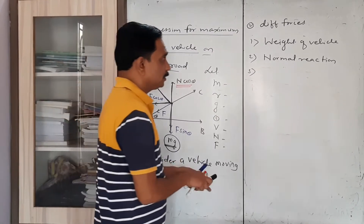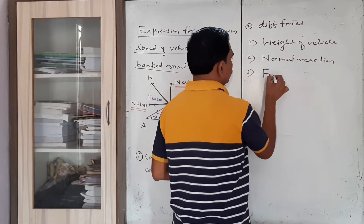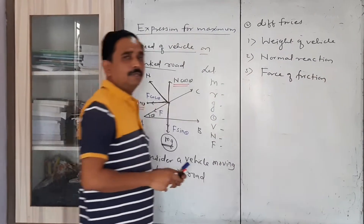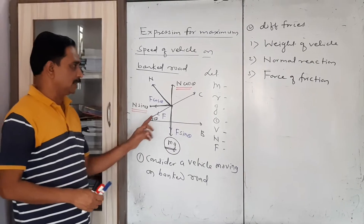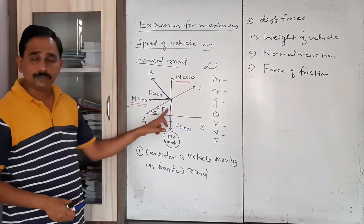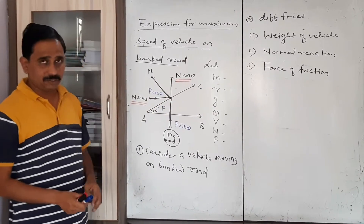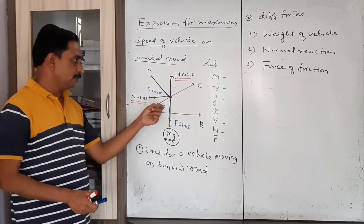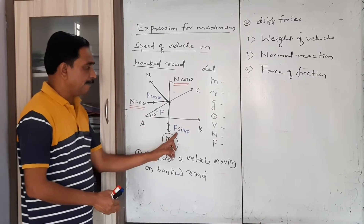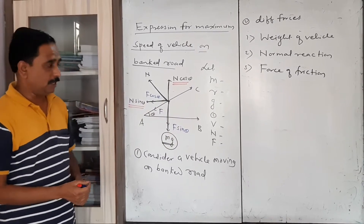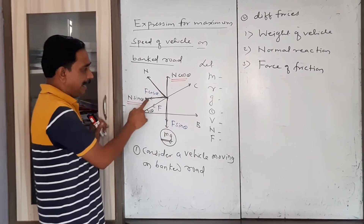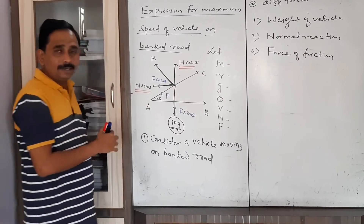The third force is the force of friction. This is the force which acts between the surface of the road and the tyres of the vehicle. This force also exists in an inclined direction, and that is why it is again divided into two components: F sin theta and F cos theta. F sin theta acts along the incline downward, and F cos theta acts towards the centre.